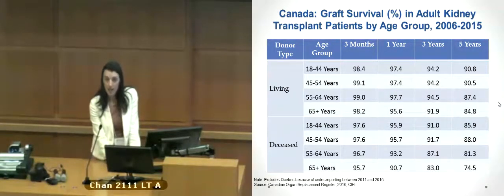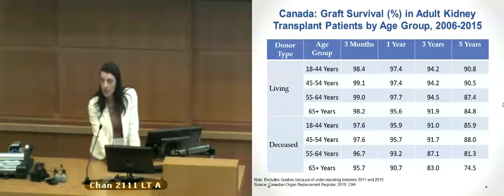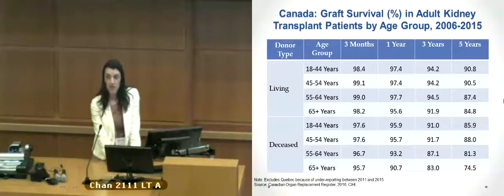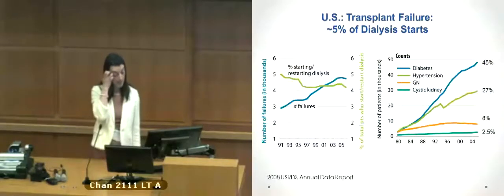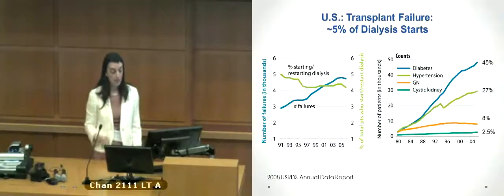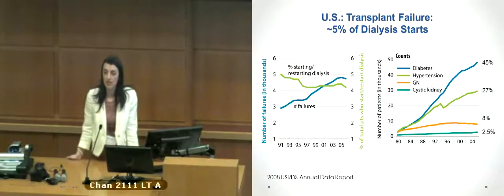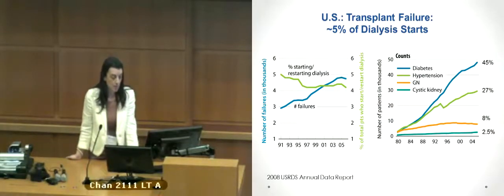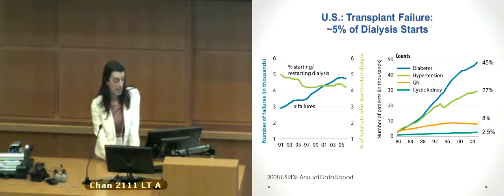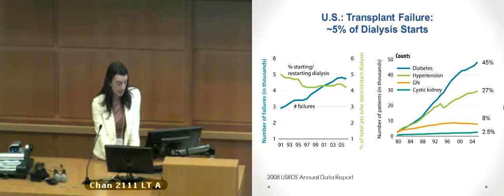However, we're doing more transplants and transplant patients are living longer, so transplants are failing and we want to manage those appropriately. If you look at US rates, about 5% of dialysis starts are people who have failing grafts. This is almost the fifth largest cause of starting dialysis, secondary to diabetes, hypertension, glomerulonephritis, and cystic disease.